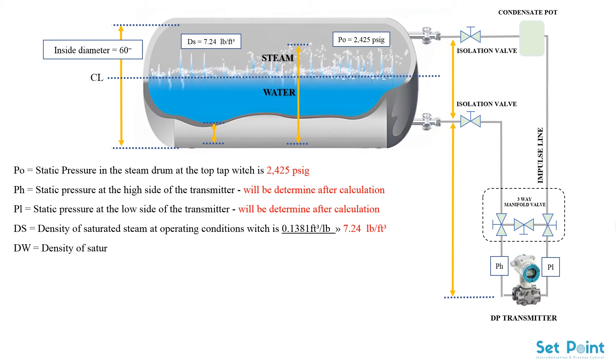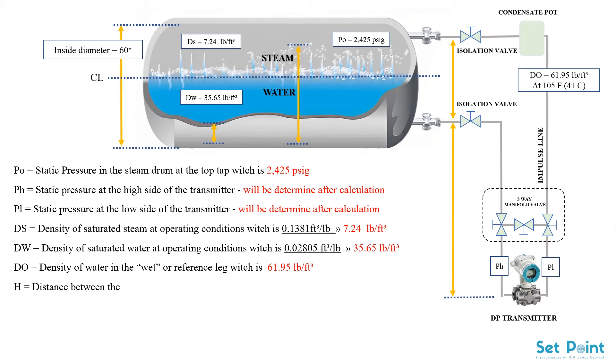DW equals density of saturated water at operating conditions which is 35.65 pounds per cubic foot. DO equals density of water in the wet or reference leg which is 61.95 pounds per cubic foot. H equals distance between the high and low drum taps which is 33 inches.